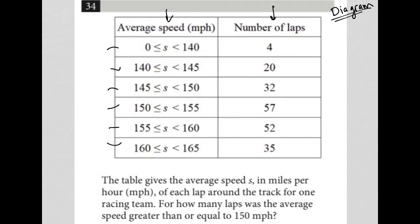Let's read the question and see exactly what we're being asked. The table gives the average speed S in miles per hour of each lap around the track for one racing team. For how many laps was the average speed greater than or equal to 150 miles per hour?